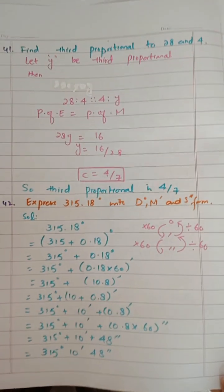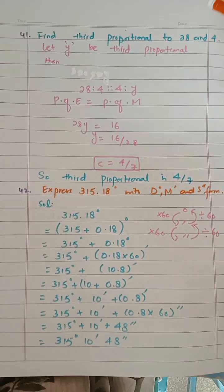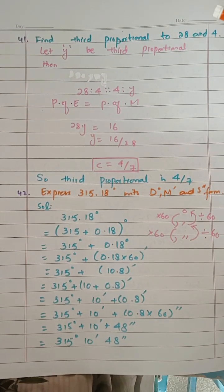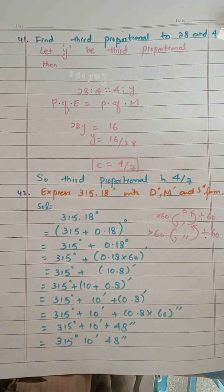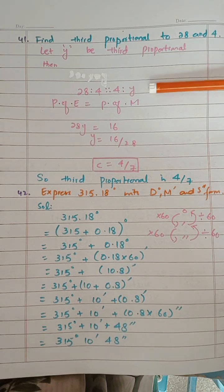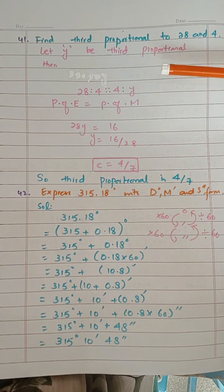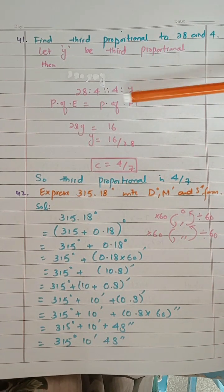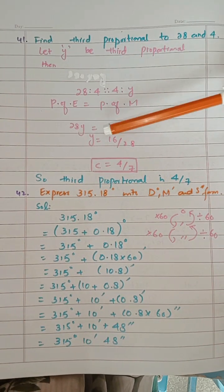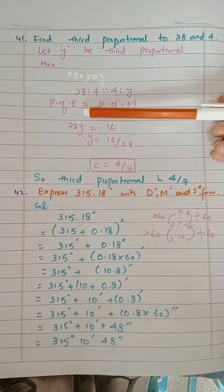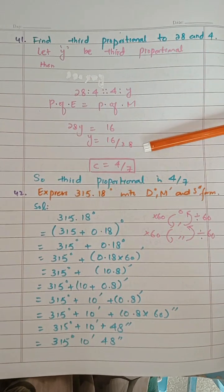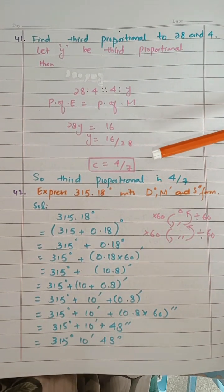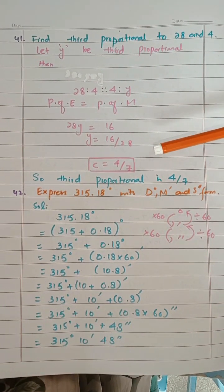From section 3.3, find the third proportion. Students often make mistakes here — the second number 4 has to be written two times, and we find the unknown number. Product of extremes equals product of means: 28y, and 4 times 4 is 16. 28 is multiplied and divided. After cancellation you will get 4 by 7.